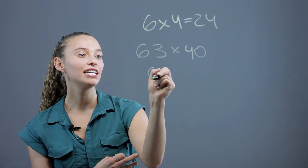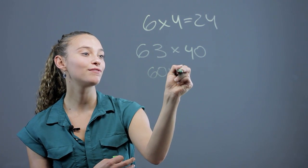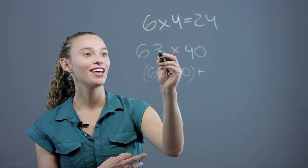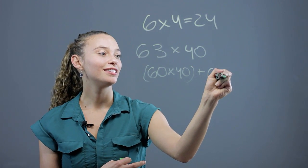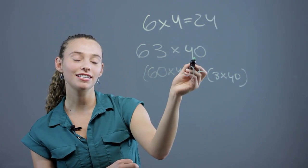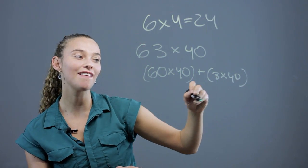You can say that's like 60 times 40 plus 3 times 40. That's a little bit easier to do than 63 times 40. We don't have to multiply everything out.